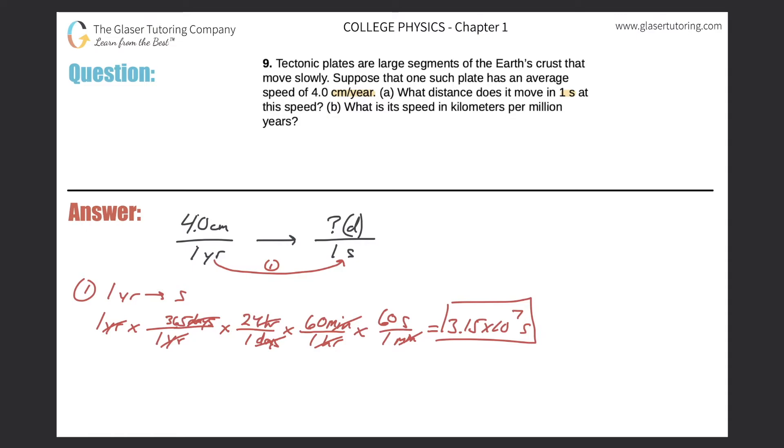Okay, great. Now remember, this tectonic plate is going to move 4 centimeters per year. So if I want to find out how far this tectonic plate will travel per second, what I can do now in step two is I can take my 4 centimeter value and then divide it by the seconds that I found. That's 3.15 times 10 to the 7 seconds.